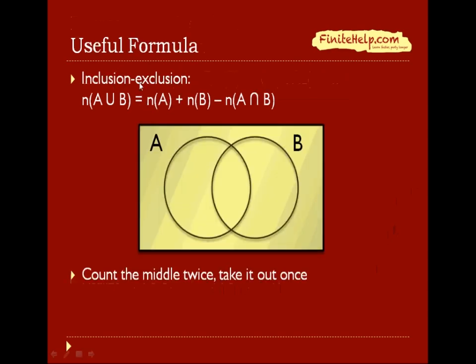Here's a useful formula to use, it's called inclusion-exclusion, but you don't really need to know the name. Just know how to use it. So this says the number of elements in A union B is the number of elements in A, plus the number of elements in B, minus the number of elements in A intersect B.